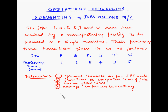Let us look at another example of sequencing N jobs on one machine. Six jobs P, Q, R, S, T, and U have been received by a manufacturing facility to be processed on a single machine. Their processing times are: P takes 7 minutes, Q takes 6 minutes, R takes 8 minutes, S takes 4 minutes, T takes 3 minutes, and U takes 5 minutes. We have to determine the optimal sequence as per the SPT rule, which is the shortest processing time method.